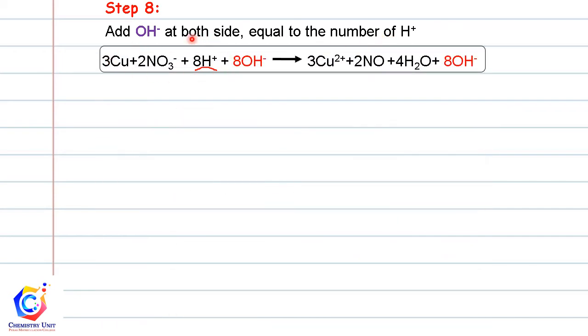So based on this equation, there are eight H+ ions. We need to add eight hydroxide ions at the reactant side and the product side.